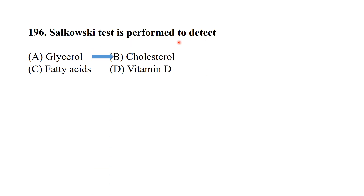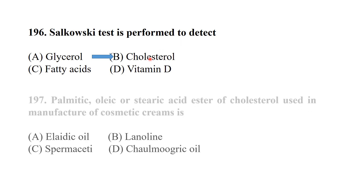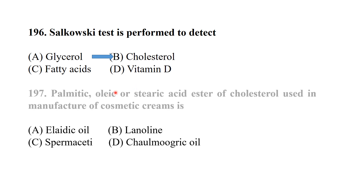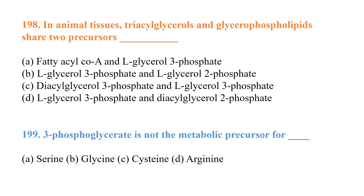MCQ 191: The Salkowski test is performed to detect cholesterol — option B is correct. MCQ 192: Palmitic acid, oleic acid, and stearic acid — cholesterol is used in the manufacture of cosmetic creams. MCQ 193: Lanolin is used in animal tissue cosmetic cream manufacturing.